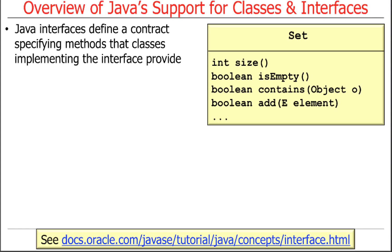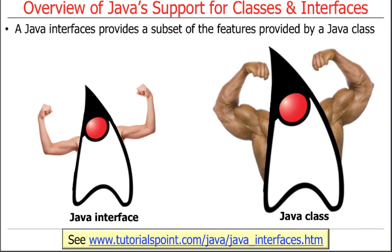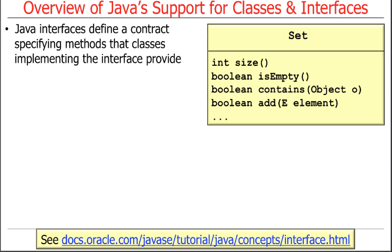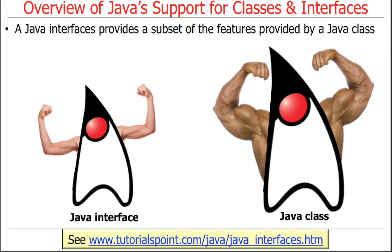There's also something called an interface. A class is one way of providing abstraction, but there's also the interface. An interface basically defines a contract that specifies methods that classes must eventually implement. A good example is the set interface in the image counter example — it has methods like isEmpty, contains, add, size, and so on. A Java interface only provides a subset of the features that a Java class has.